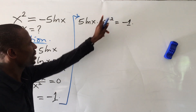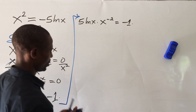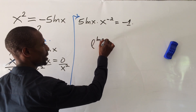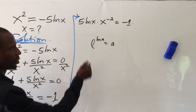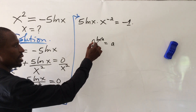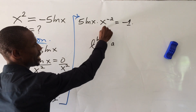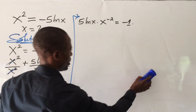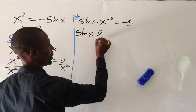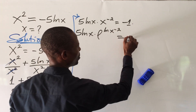Now I can rewrite x to the power of minus 2 using the law that says e to the power of ln(a) equals a. So x to the power of minus 2 can be written as e to the power of ln(x) raised to minus 2. That gives us 5 ln(x) times e to the power of ln(x) raised to the power of minus 2, equal to minus 1.